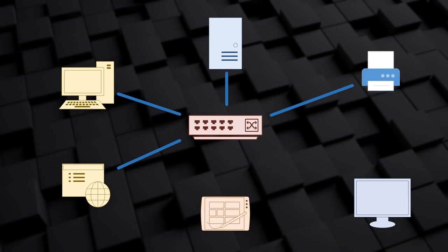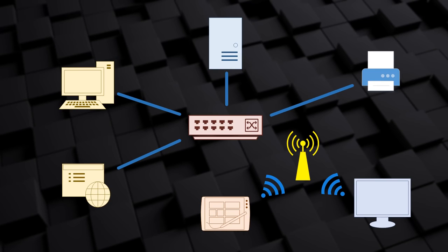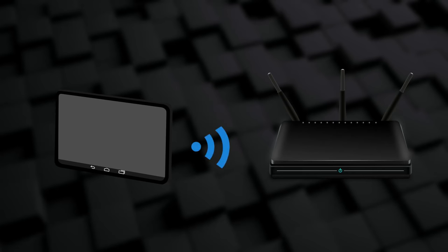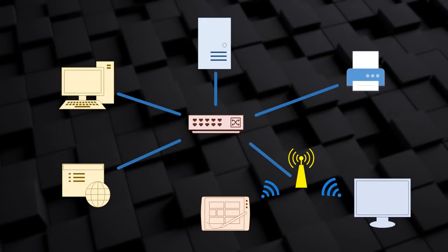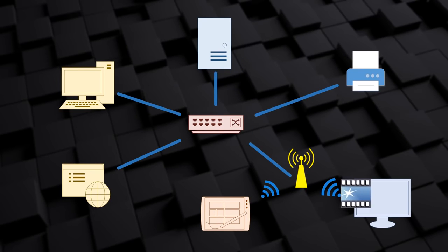We can also connect devices wirelessly. A common way to do this is to use a wireless access point — a wireless network like this is also called Wi-Fi. An example is a tablet, which is impractical to cable in, so wireless is a good option. The access point is like a switch without cables; more than one device can connect to it at a time, but without the messy cabling. The access point can also be connected to the switch with a cable, so wired and wireless devices can all be part of the same network.